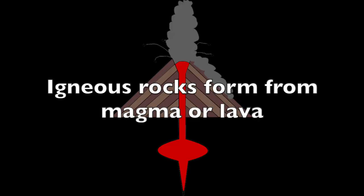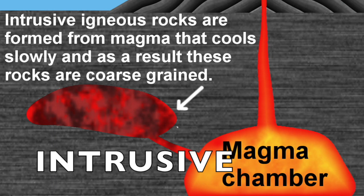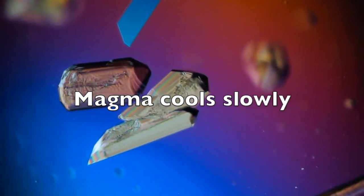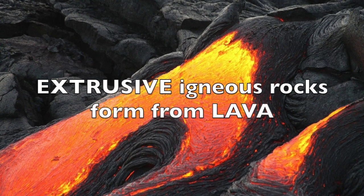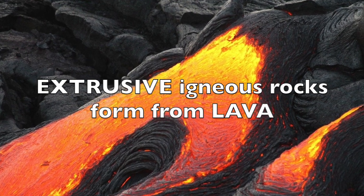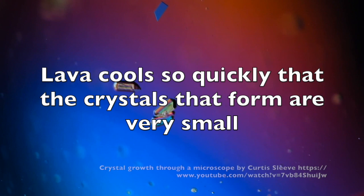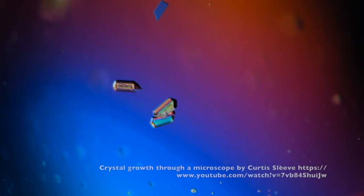In summary, igneous rocks form from magma or lava. There are two types of igneous rocks. Intrusive igneous rocks form from magma inside the earth; magma cools slowly enough so that crystals can form. Extrusive igneous rocks form from lava outside the earth; lava cools so quickly that the crystals that form are very small, or there aren't any.